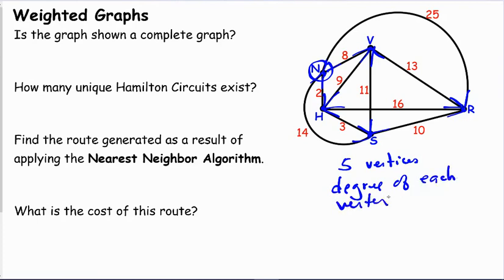So the degree of each vertex is four, which is one less than the number of vertices. Therefore, it is a complete graph.